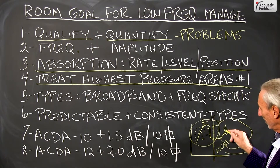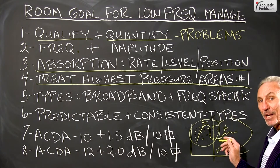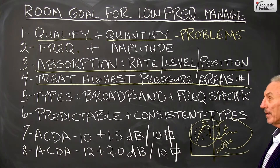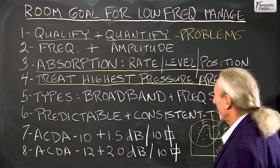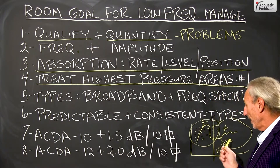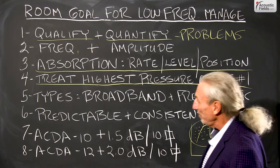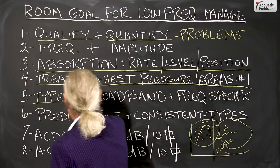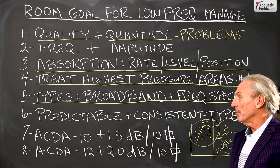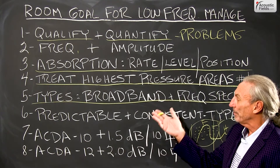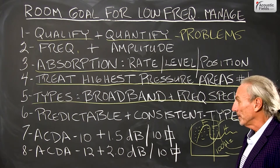The reason is that the low-frequency bump is the fundamental and what's above it is the harmonic — we have the head and the tail that we need to get in unison together. So treat the highest pressure area first, then we can address everything above 100Hz. If we group the absorber types into categories: broadband would be diaphragmatic and membrane, while frequency specific would be Helmholtz.